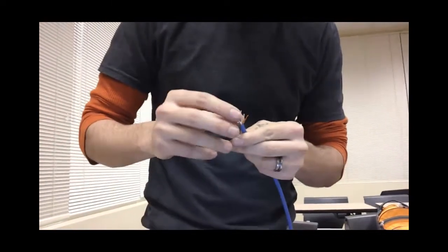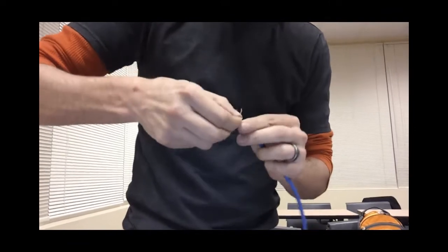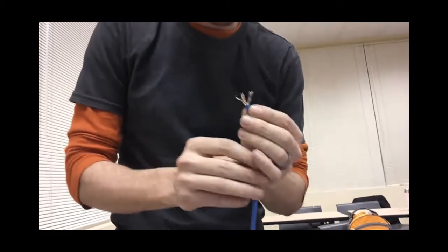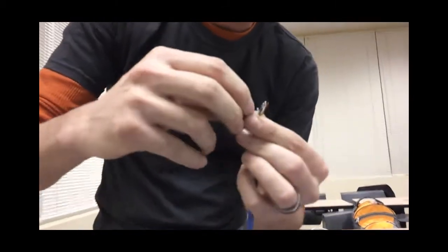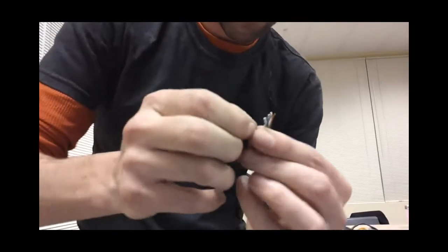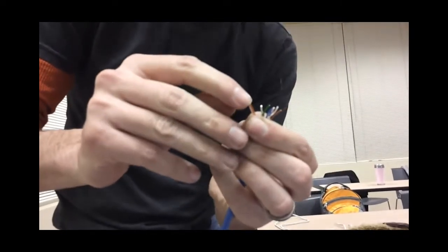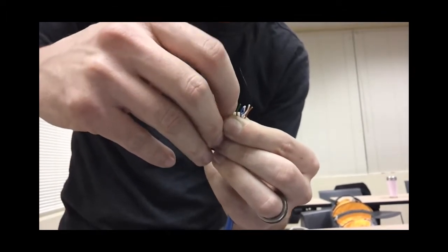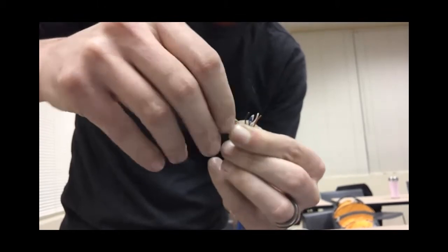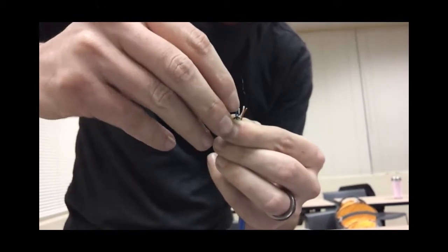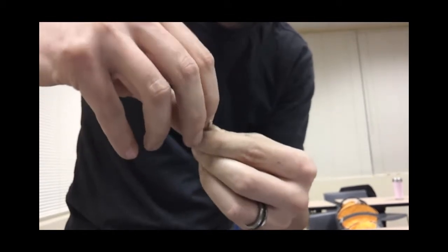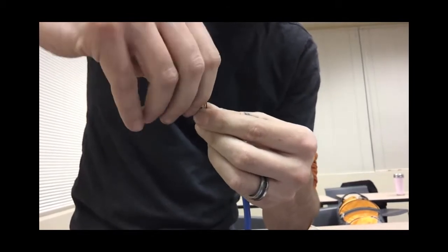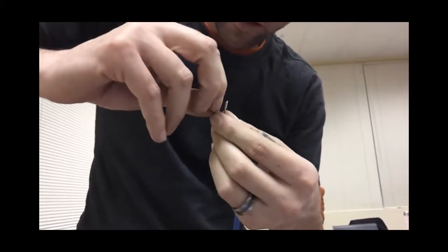Now they're all no longer twisted together. You start off with white orange, then orange, then white green. Next, you get your solid blue. Sometimes they like to not go as planned.